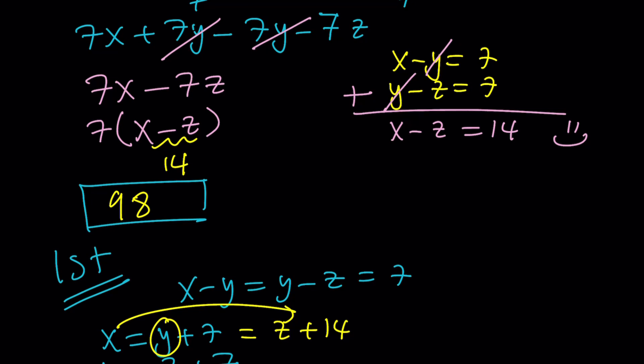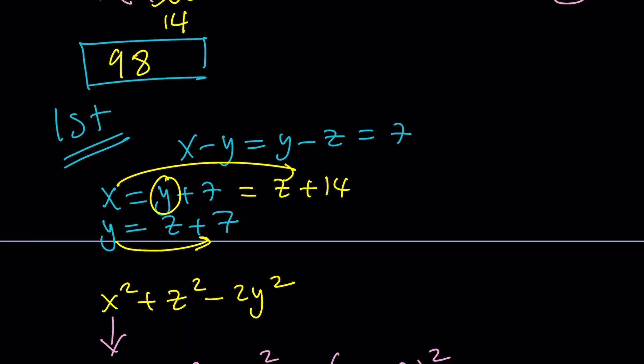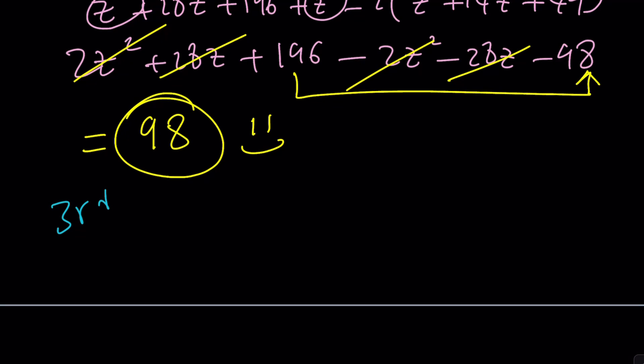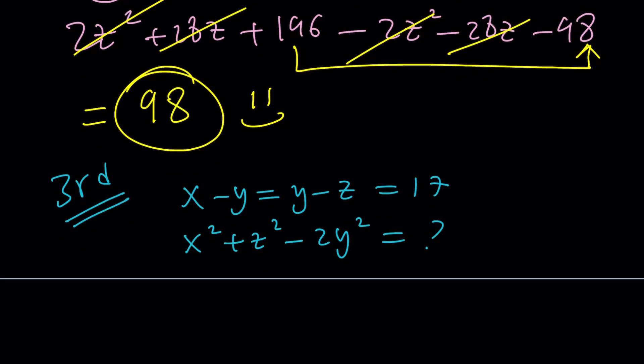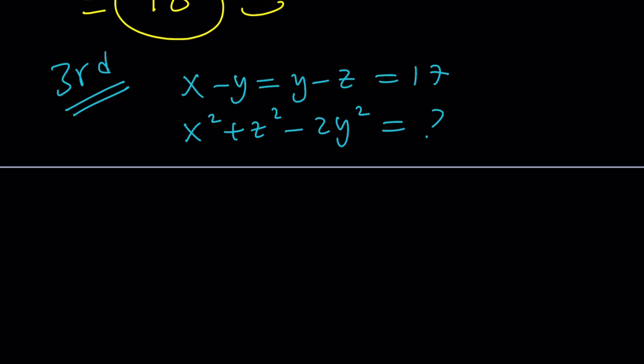Are we done? Not yet, because we still have another method. I know some people are not going to like the third method for obvious reasons because it is very numerical. We have this system, and we're supposed to evaluate x squared plus z squared minus 2y squared. Here's what we're going to do. Since we're always finding a numerical value, and especially if you are taking a multiple choice test, this will be perfect.